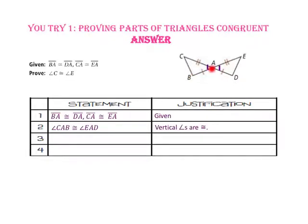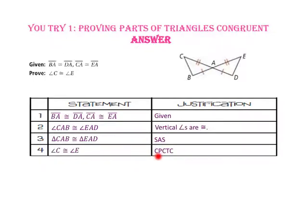We know that angle CAB is congruent to angle EAD because vertical angles are congruent. Since we have two sides and an included angle corresponding to two congruent sides and an included angle of the other triangle, triangle CAB is congruent to triangle EAD by side-angle-side. And finally, since corresponding parts of congruent triangles are congruent, angle C is congruent to angle E by CPCTC.